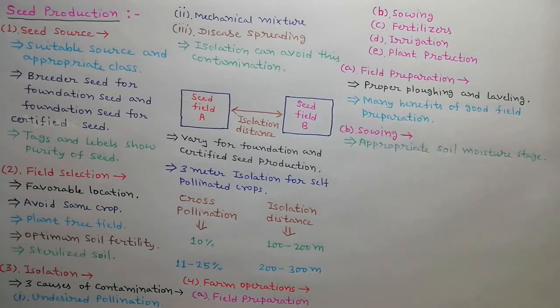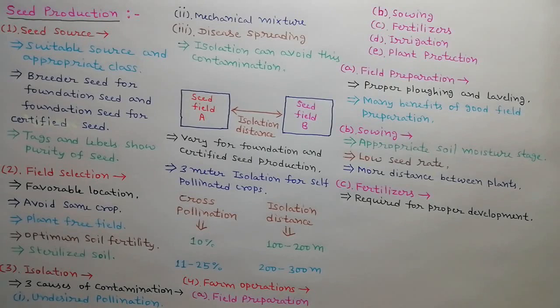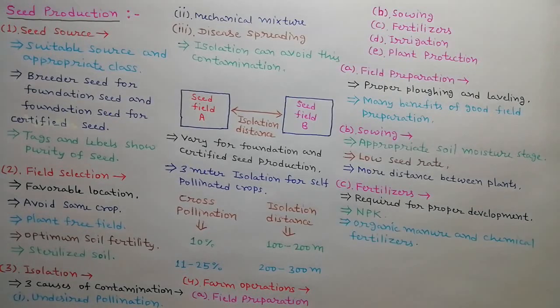Sowing must be done at appropriate soil moisture stage. More distance is maintained between rows and plants so that undesired plants can be removed easily. Fertilizers are required for proper development of plants and grains. NPK means Nitrogen, Phosphorus and Potassium are the main nutrients for plants. Organic manure and chemical fertilizers can be used for this purpose.